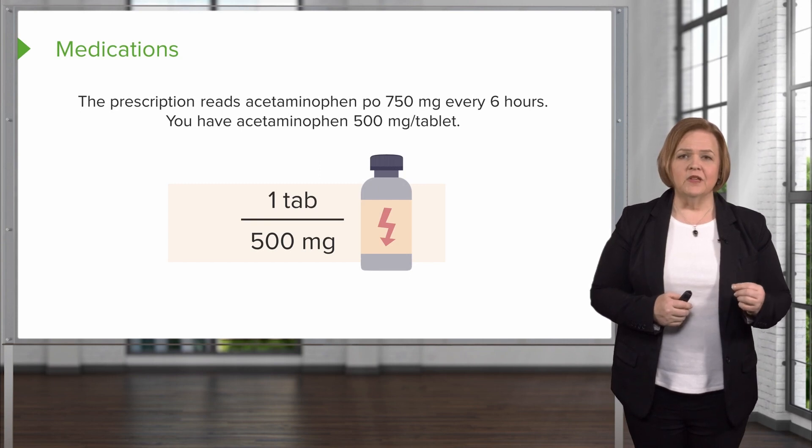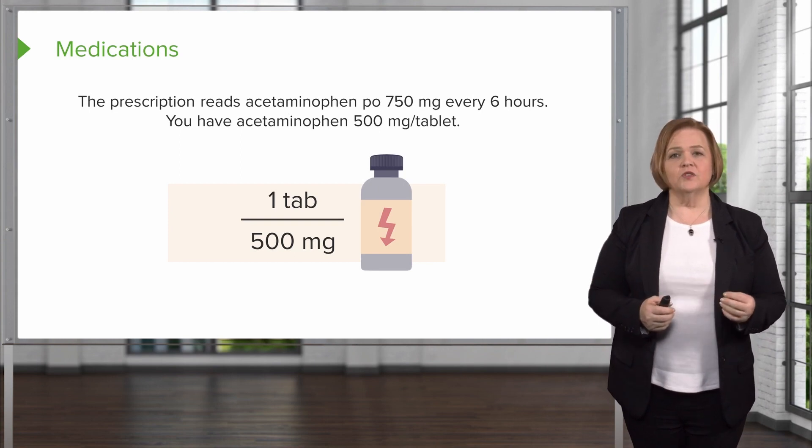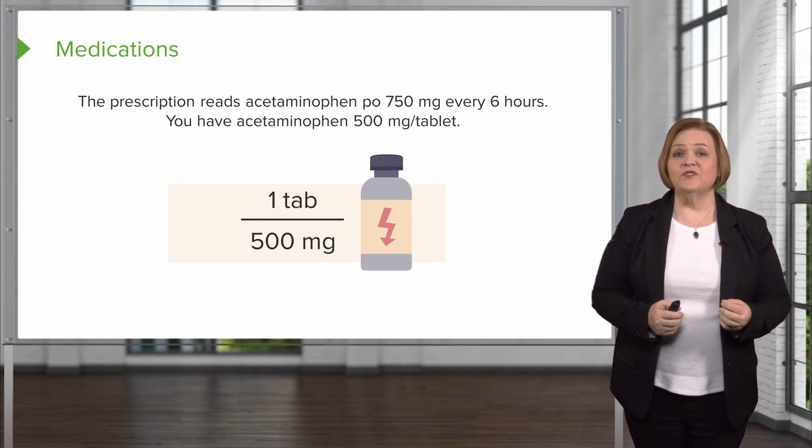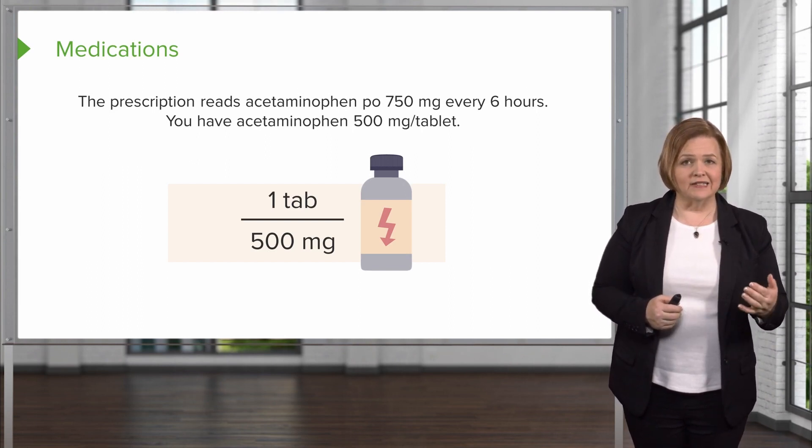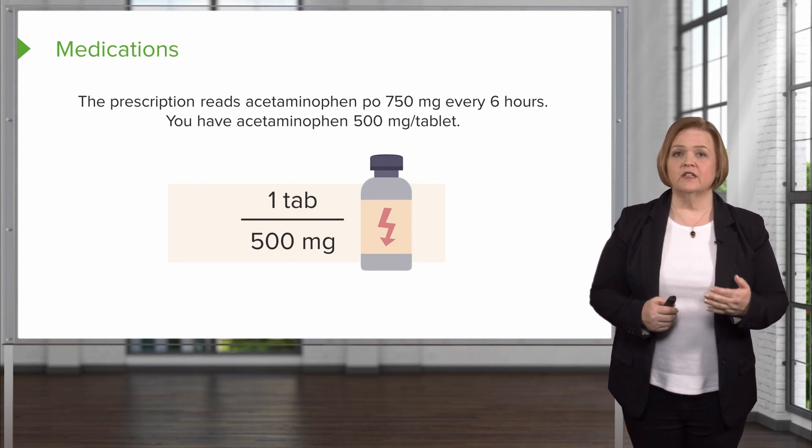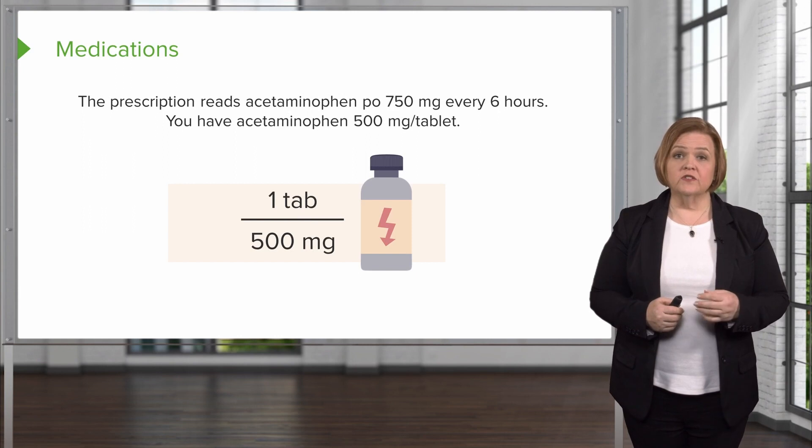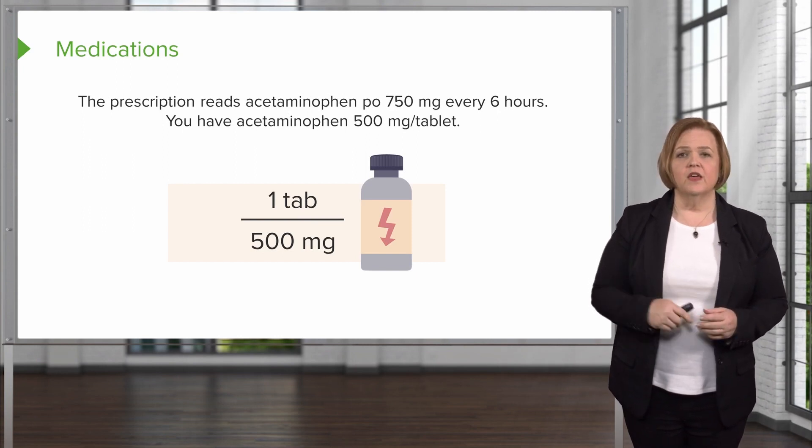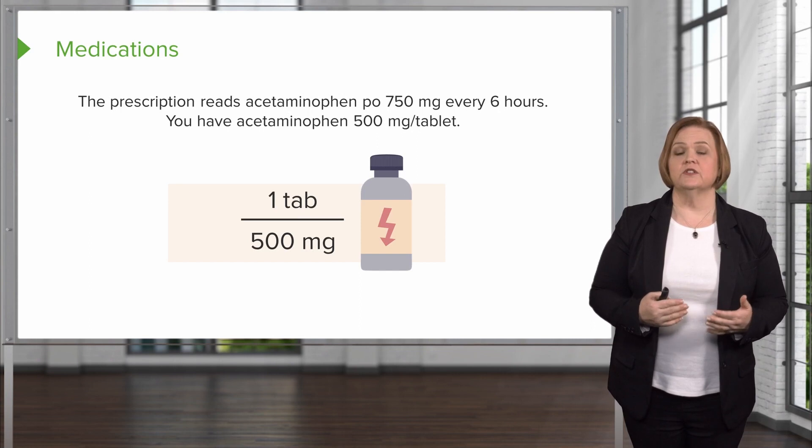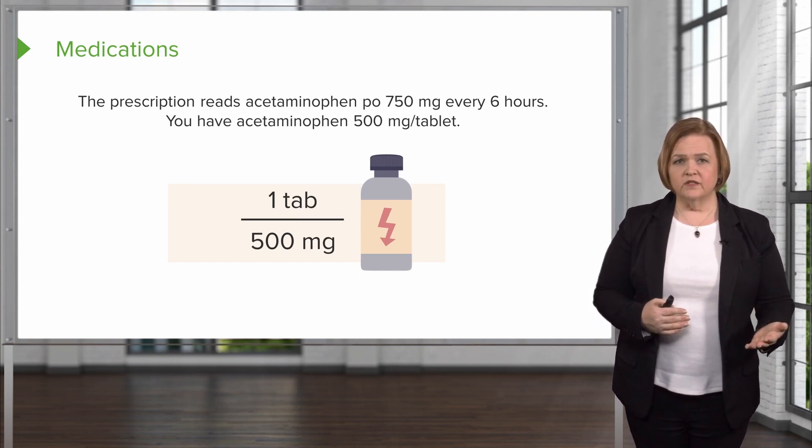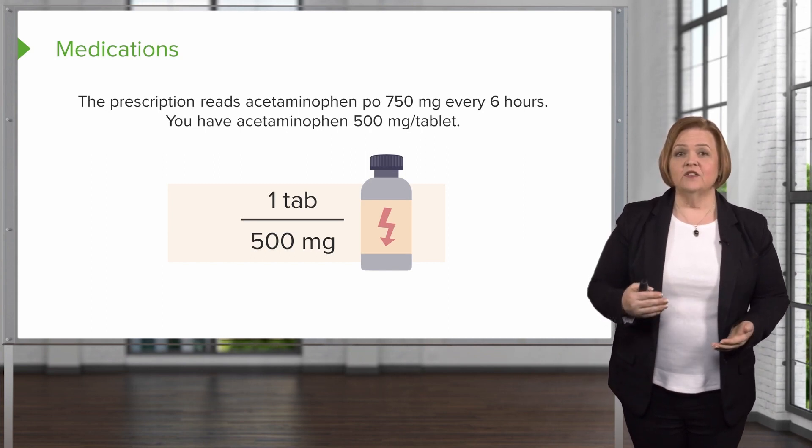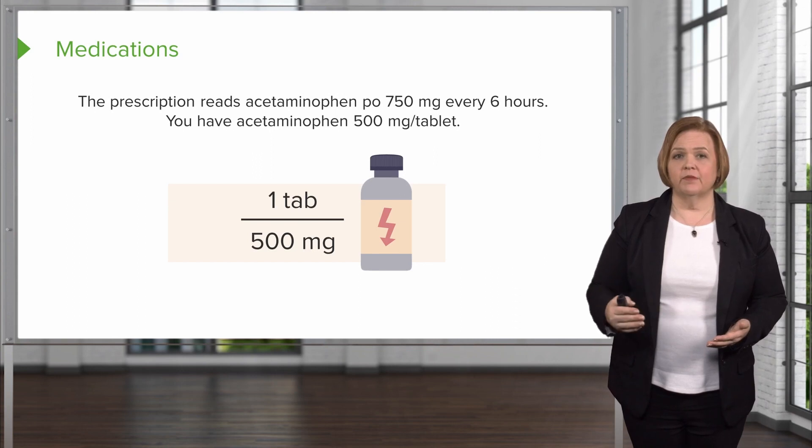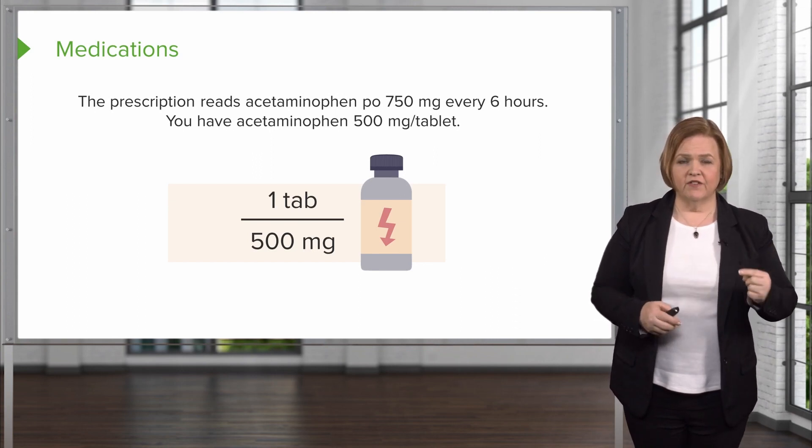Now the order reads acetaminophen PO 750 milligrams every six hours. You have acetaminophen 500 milligrams per tablet. Acetaminophen PO, that means per os, it stands for the Latin, by mouth. 750 milligrams is the amount the physician has ordered of Tylenol or acetaminophen they should receive every six hours. Now you might often see Q instead of the word every, you might see a lowercase q. That also means every or each six hours. So this is what the physician wants. 750 milligrams every six hours. What I have on hand is 500 milligrams per tablet. So one tab equals 500 milligrams.